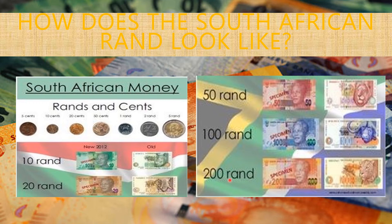The 200 Rand note is orange. It has the number 200 on it, Nelson Mandela at the front, and the leopard at the back. These animals are the South African big five.